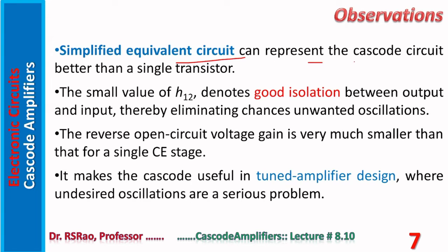A simplified equivalent circuit can represent the cascode circuit better than a single transistor. Two small-signal hybrid equivalent circuits exist: one is the exact equivalent circuit associated with four parameters, and the other is the simplified equivalent circuit associated with two parameters. Analysis is easier when using the simplified equivalent circuit, but it can only be used when a certain condition is satisfied: HOE × RL should be less than 0.1.